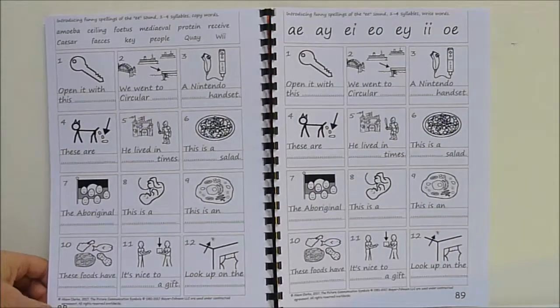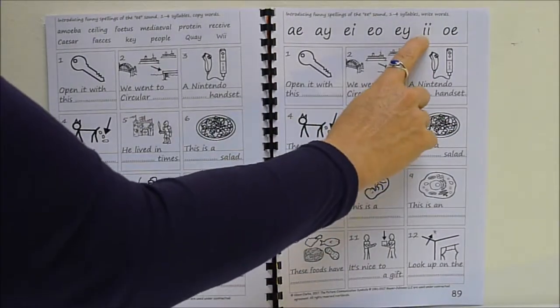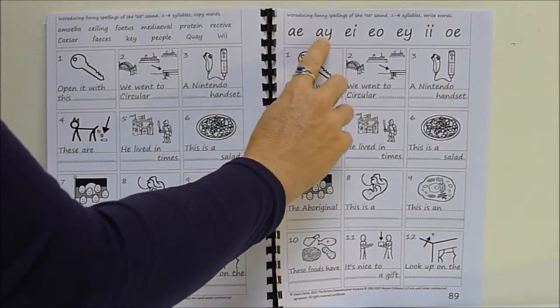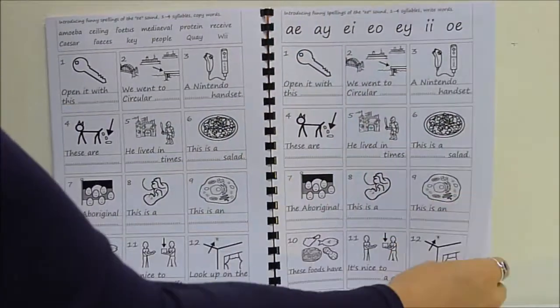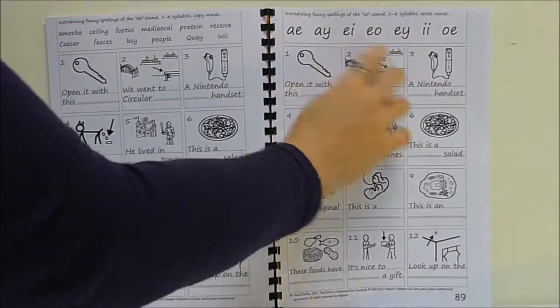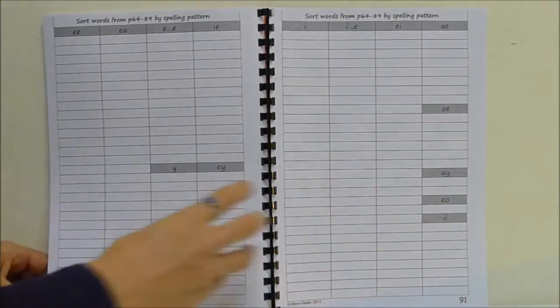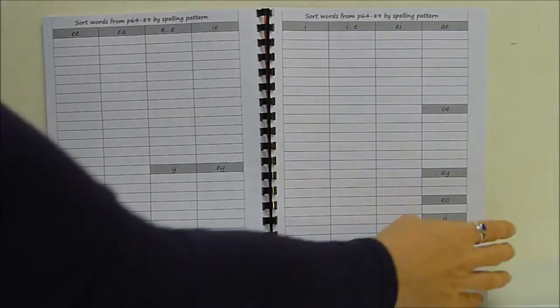And then some funny E's like Nintendo Wii and people and a circular key. Very funny spellings for E. Not so common, protein.